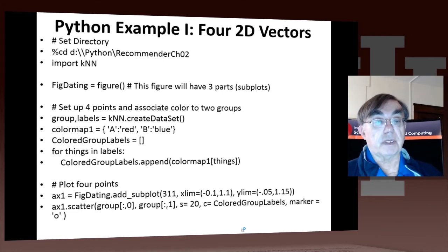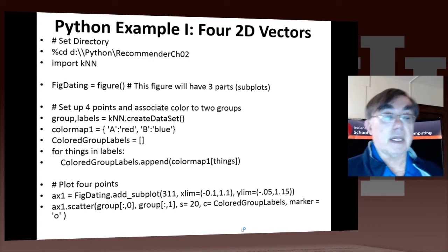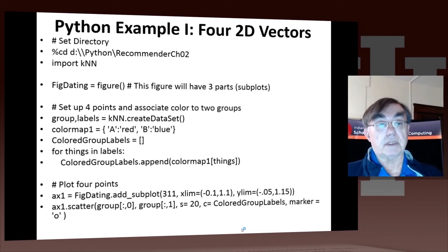The first command, which is invoking this create dataset function we already went through, defines group and labels. We're going to associate the points A at the top right with red, and the points B at the bottom left as blue. We define these colored group labels by having the values red and blue, which will be interpreted by the scatter command later on at the bottom of this page. So by the end of this page, we've defined this dataset of four points and actually plotted those four points on one particular subplot.